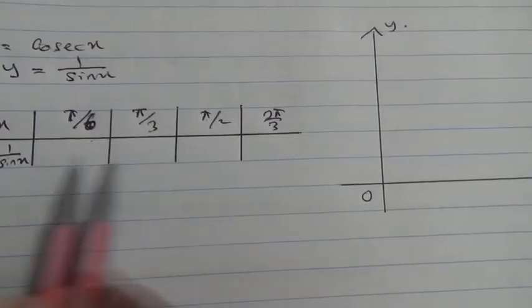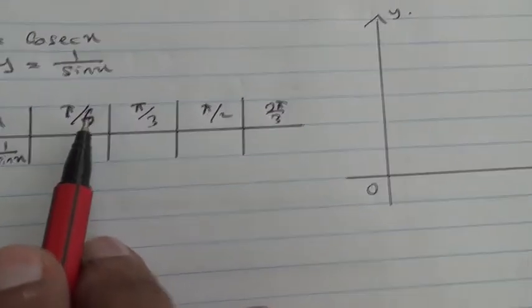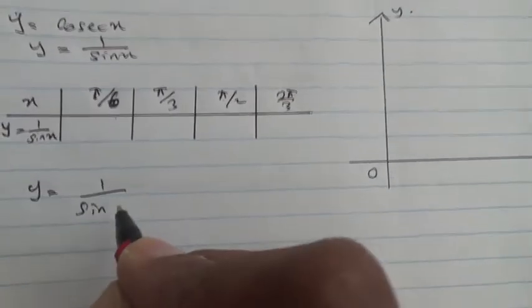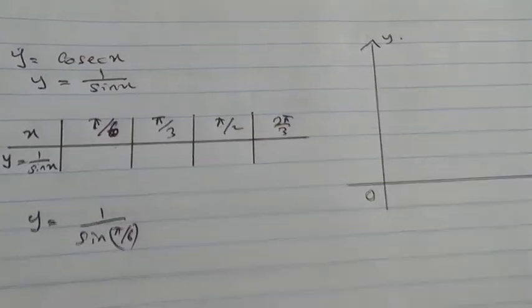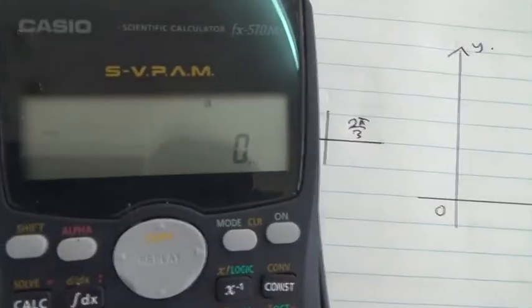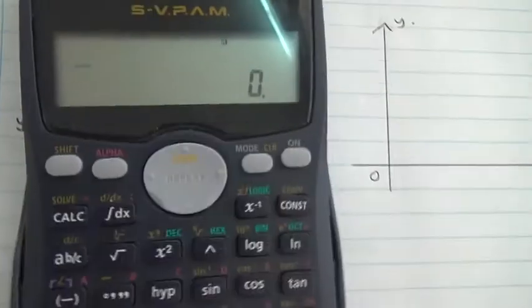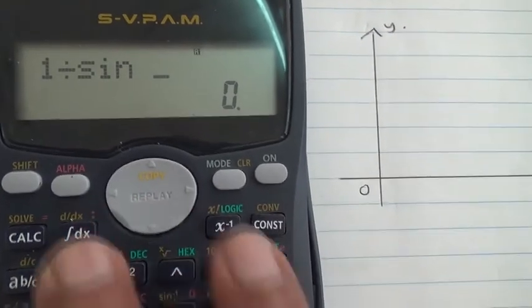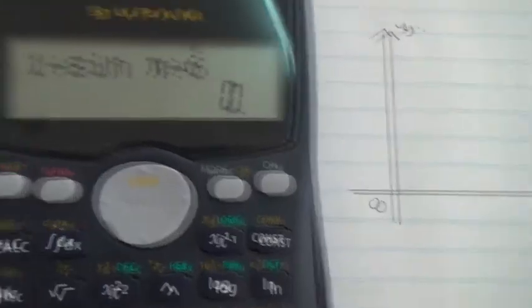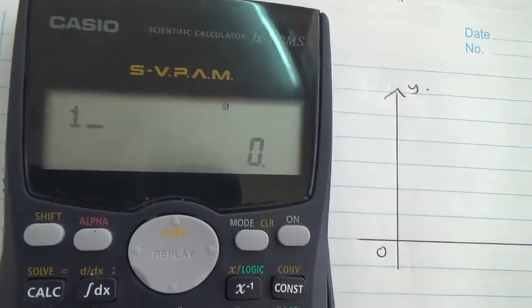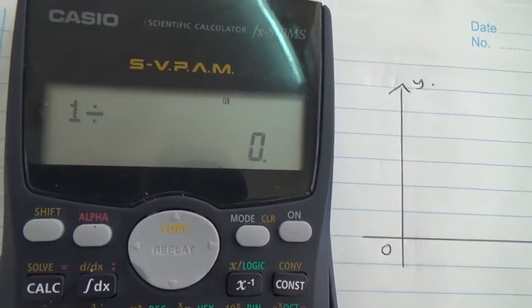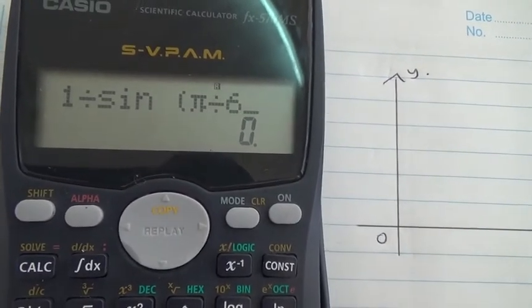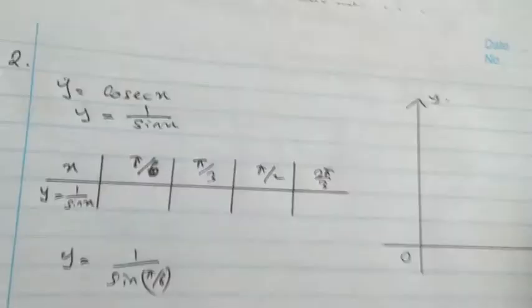We have to draw up a table of values to be able to find the area. What is pi upon 6 being replaced here? You're looking at y equals 1 upon sine of pi upon 6. So that's 1 divided by sine of pi upon 6, it's going to give you two, therefore this is two.